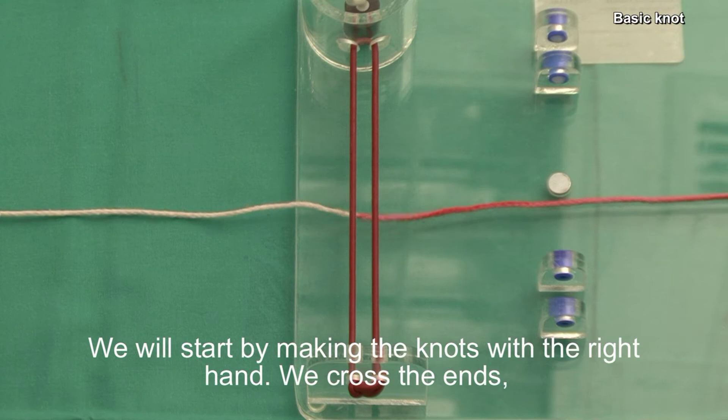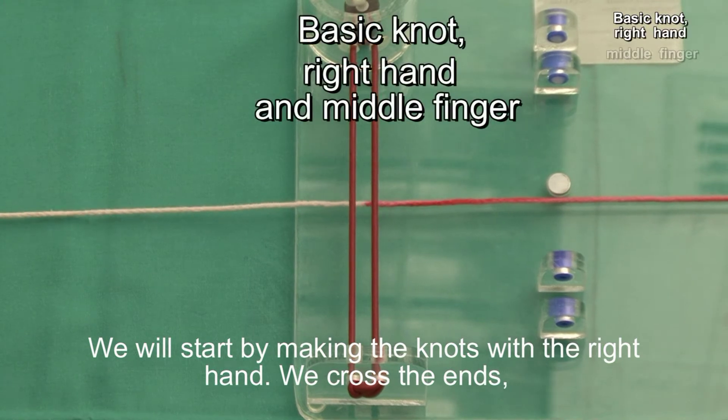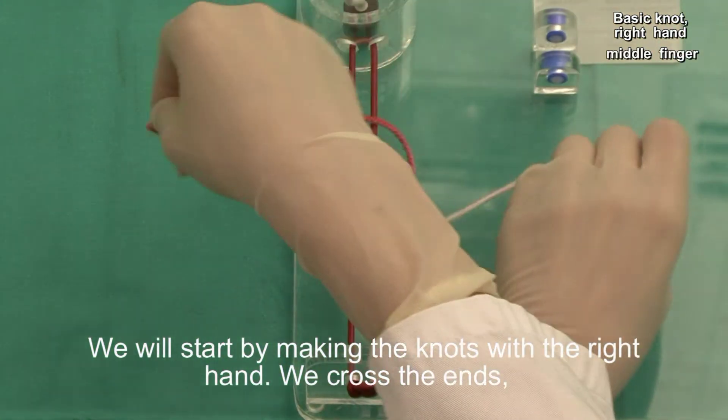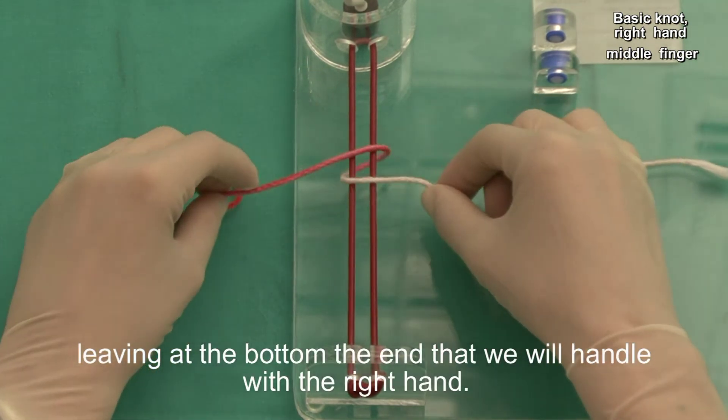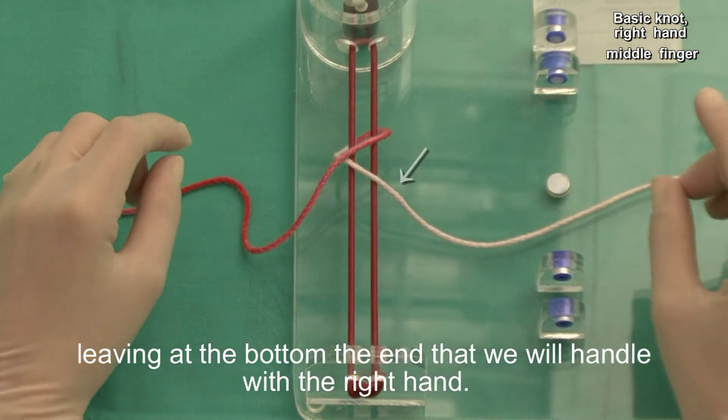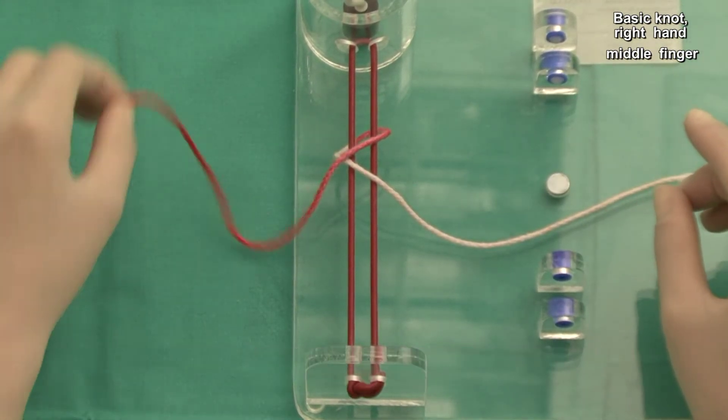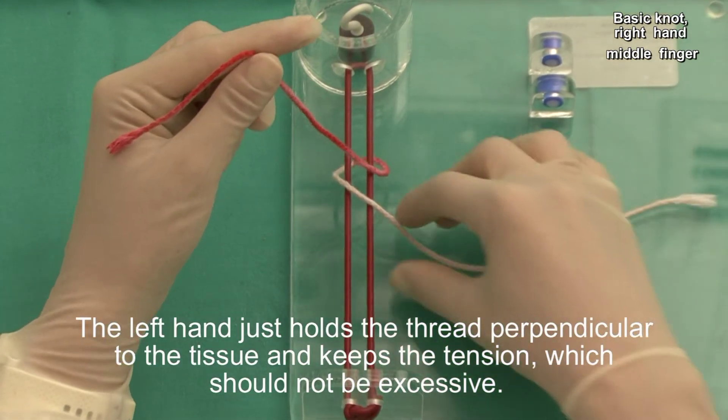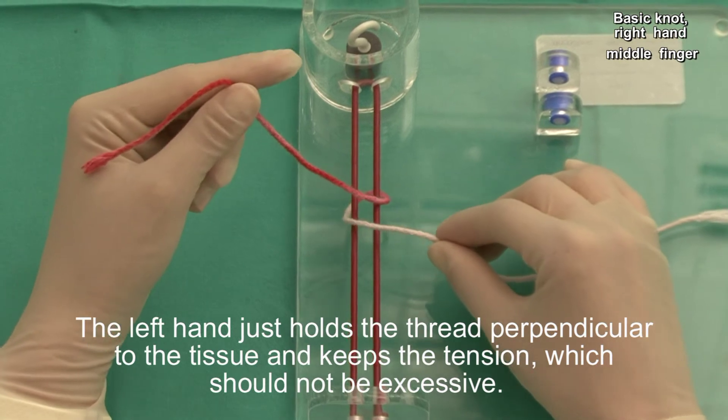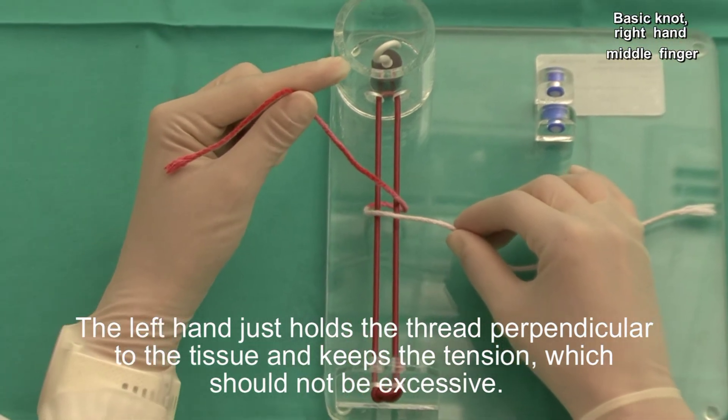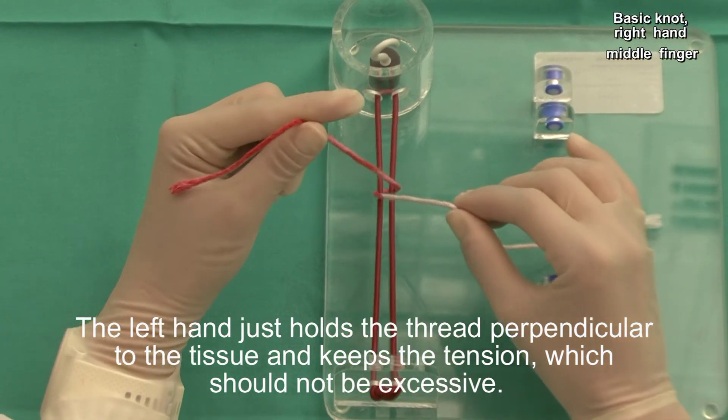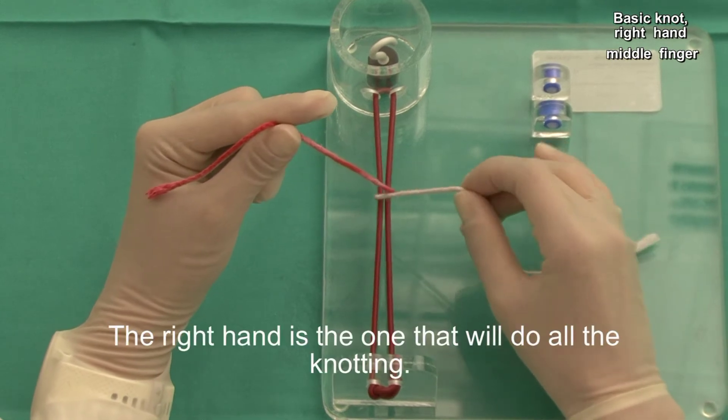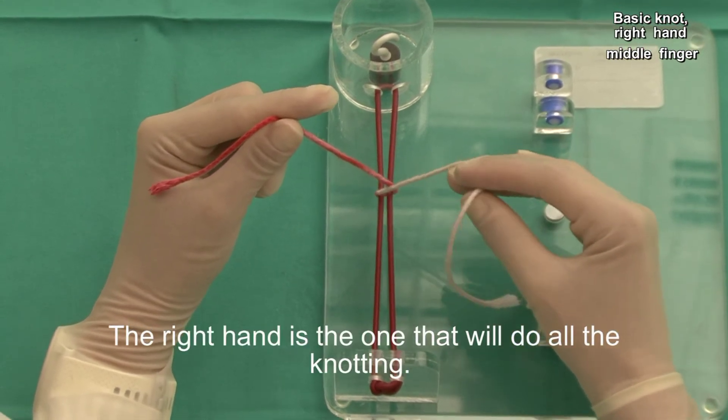We will start by making the knots with the right hand. We cross the ends, leaving at the bottom the end that we will handle with the right hand. The left hand just holds the thread perpendicular to the tissue and keeps the tension, which should not be excessive. The right hand is the one that will do all the knotting.